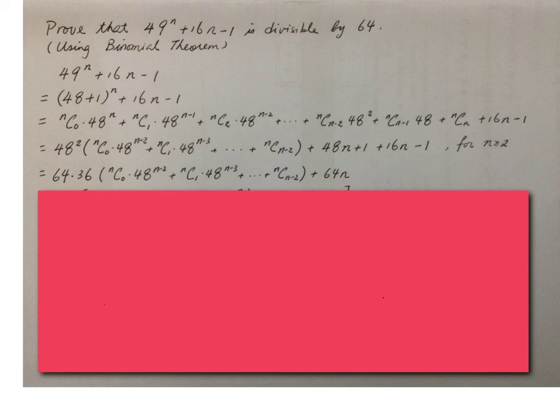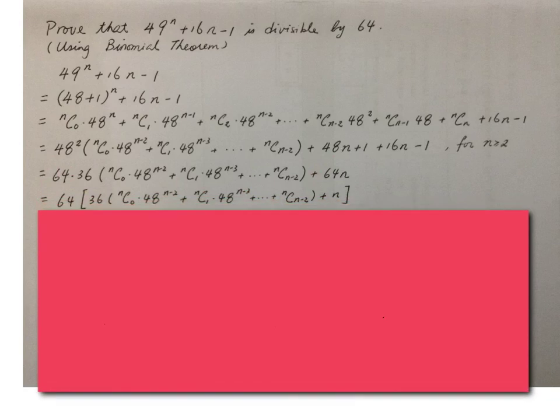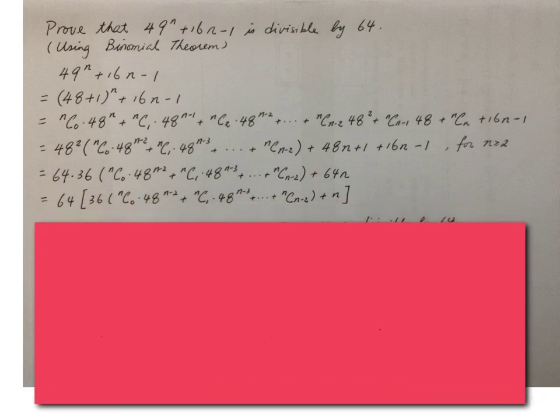And then we can see the common factor 64. And then we can just take the common factor. And then if we look at this expression, all the binomial coefficients are integers. That's why this part is just an integer. An integer times 64 means it is a multiple of 64.